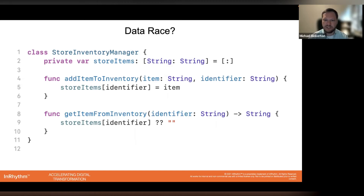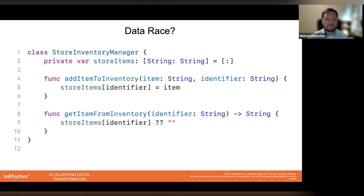With that said, let's dive into an example. Here we have the code for a very simple inventory management system. This class has a dictionary of items in its inventory and two methods: one to add an item to the inventory and one to get an item from the inventory. Initially, this code may appear to be just fine, and in many cases it could be. However, if you're working with this class in a multi-threaded context, you run the risk of running into issues — as it's set up now, it's not thread-safe and is prone to data races if two or more threads attempt to access the stored items dictionary.